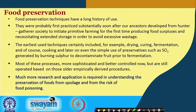Most of these processes, although more sophisticated and much better controlled now, are still operated based on those empirically derived old procedures. There is a need to research the required application-oriented effects to understand the preservation of food from spoilage as well as from the risk of food poisoning. If we understand the different factors which govern the spoilage of food and the risks to food safety, then our job as food processors or food preservers becomes easier.